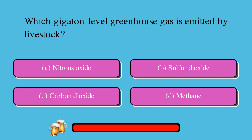Which gigaton-level greenhouse gas is emitted by livestock? A. Nitrous oxide, B. Sulfur dioxide, C. Carbon dioxide, or D. Methane?